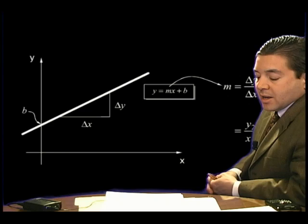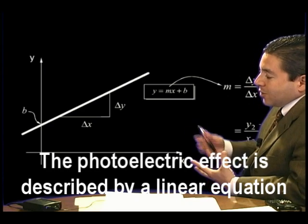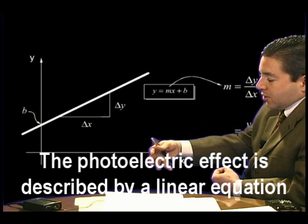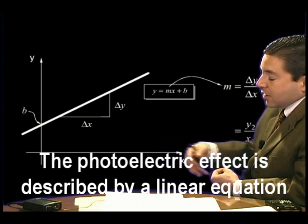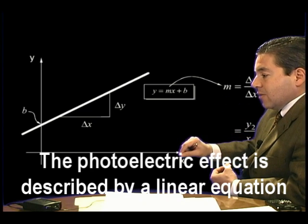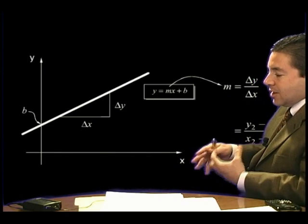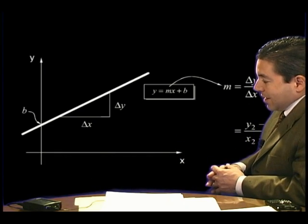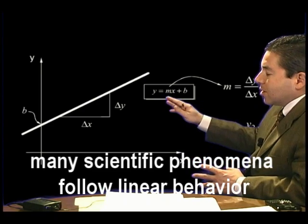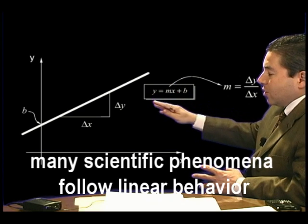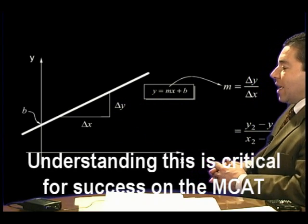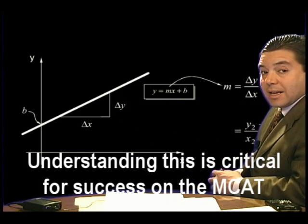Another linear equation is the photoelectric effect. The kinetic energy of an electron ejected from a surface on which you shine light is going to be proportional to the frequency of the light hitting that surface. We're not going to go through those details presently, but the point is that many physical relationships can ultimately be expressed as a linear equation, and hence learning and understanding this equation and its relationship to its graph is critical for success on the MCAT.